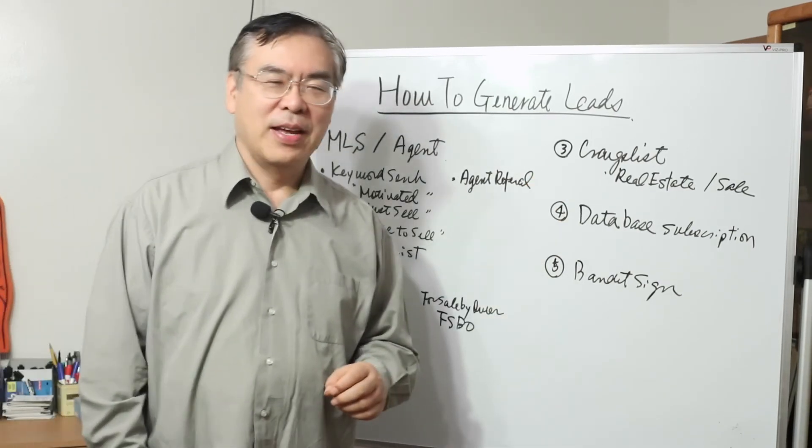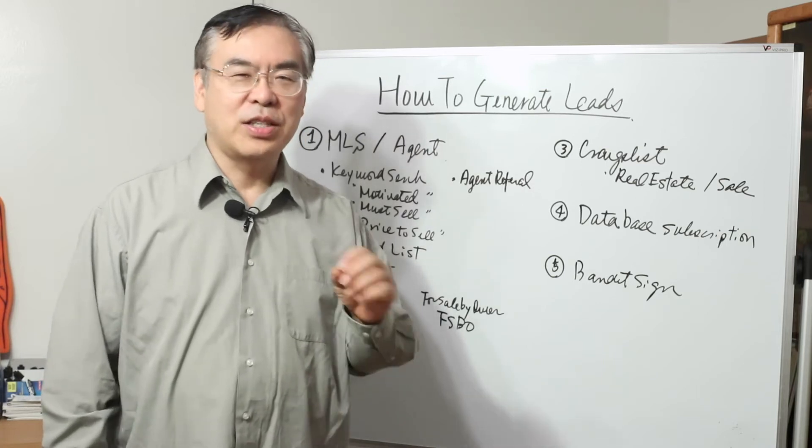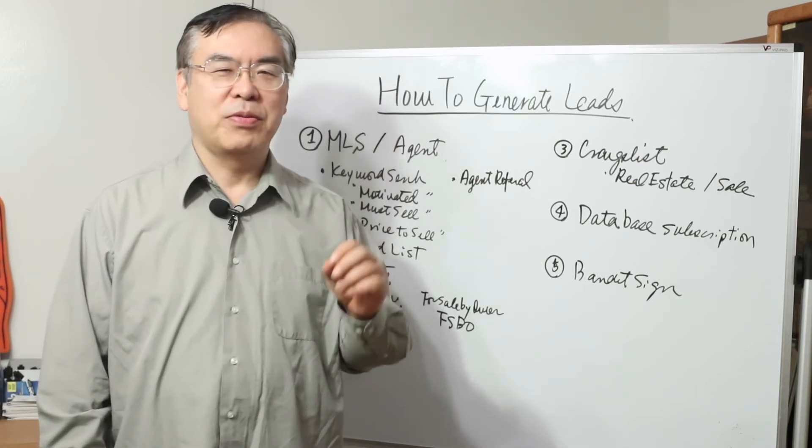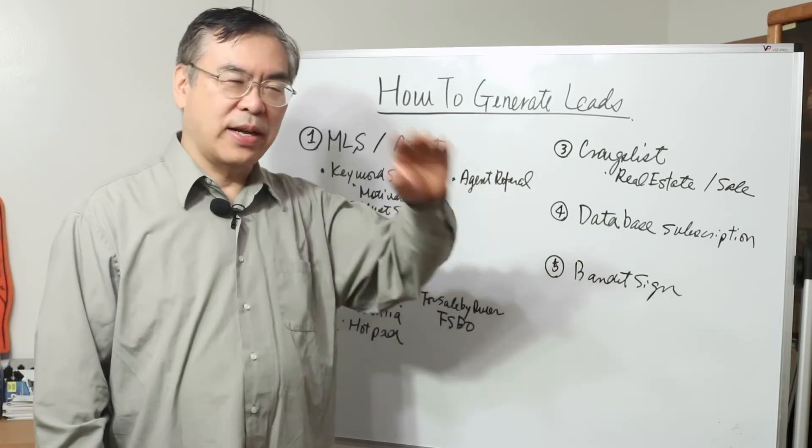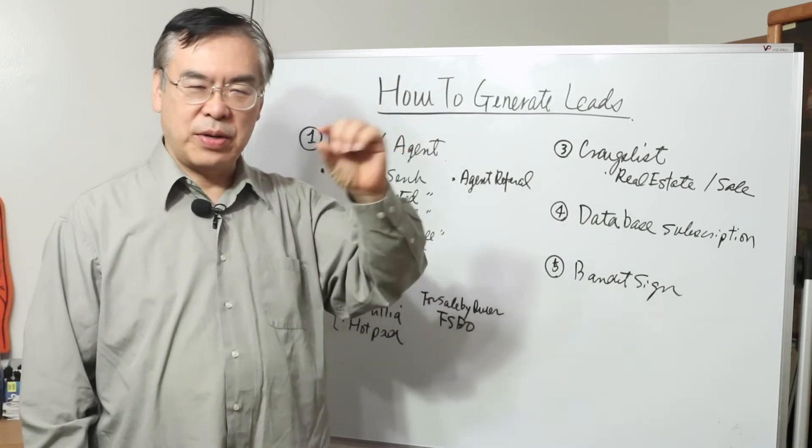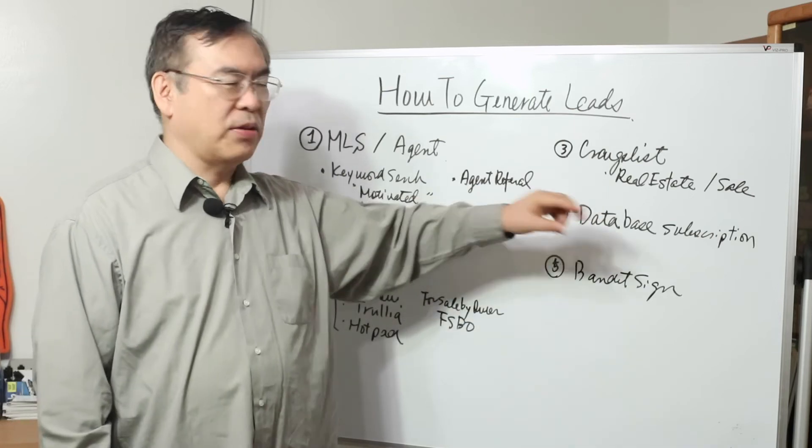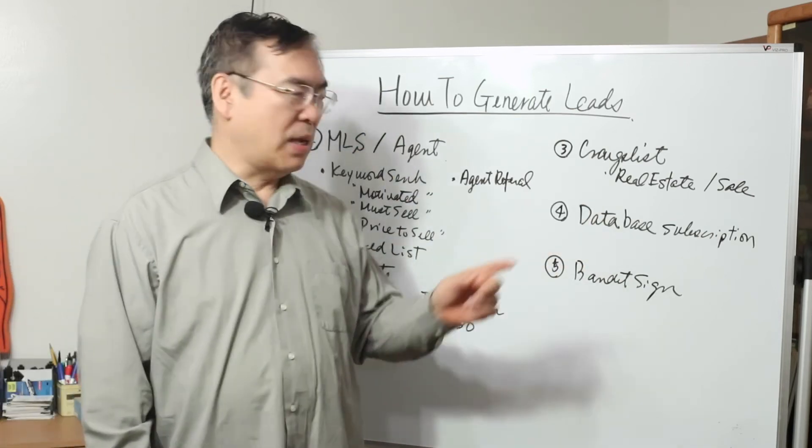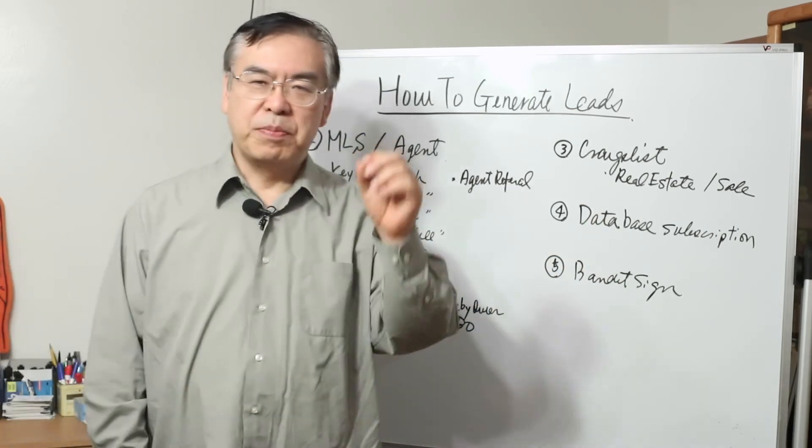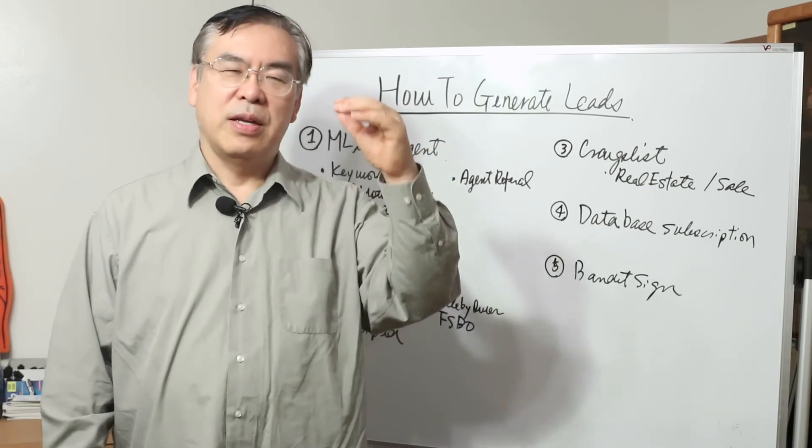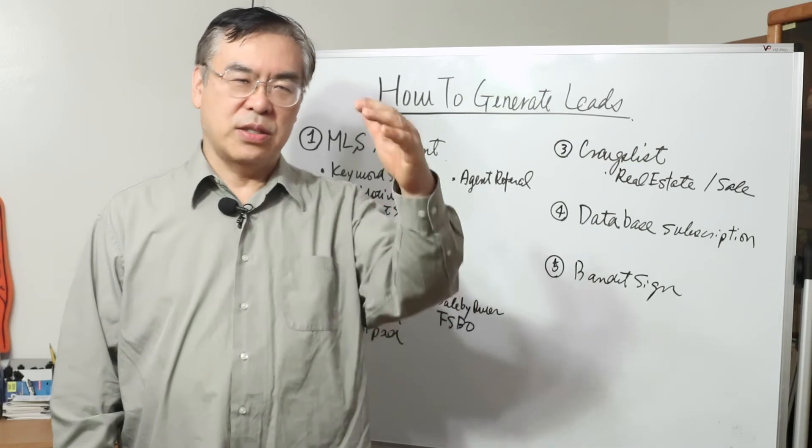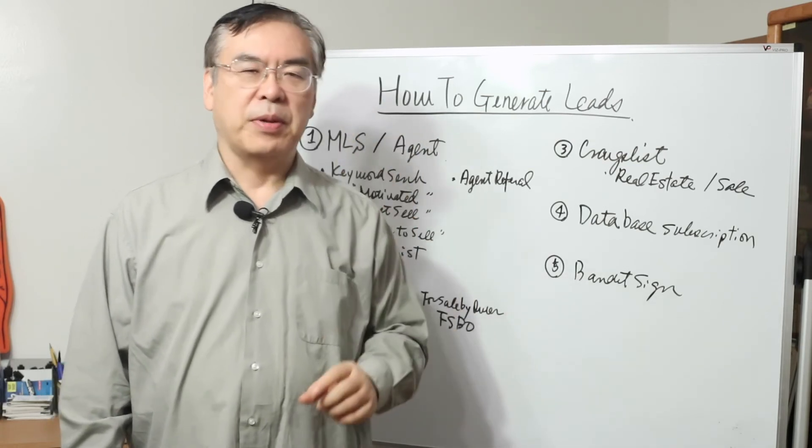Third, Craigslist. I love Craigslist. There are lots of property on the Craigslist. You go to the real estate section. Of course, there's a seller, a buyer, also rental. We can find out the seller section. And then same with the MLS, you can put motivated or must sell. You can use those keywords and then sort by those keywords and find out the properties.